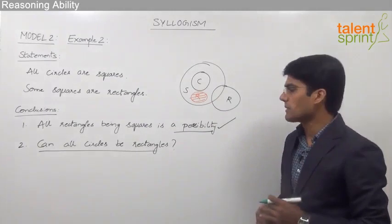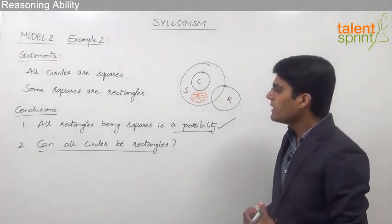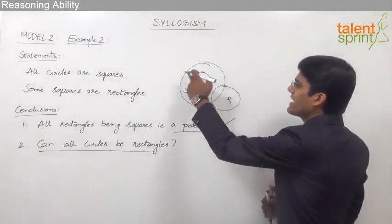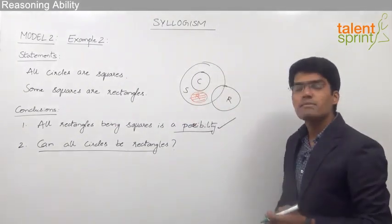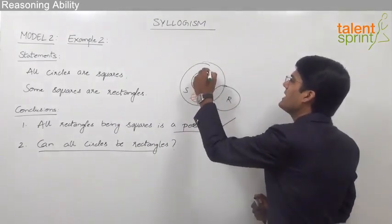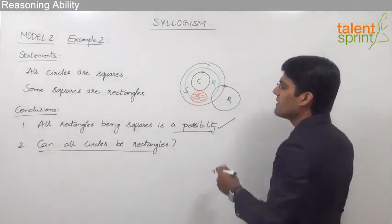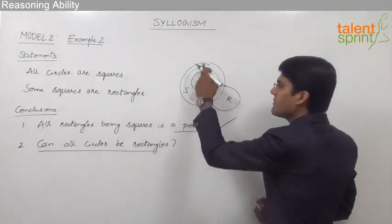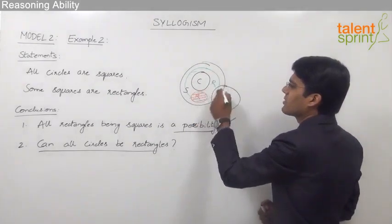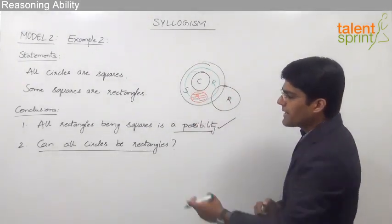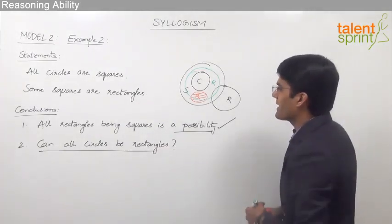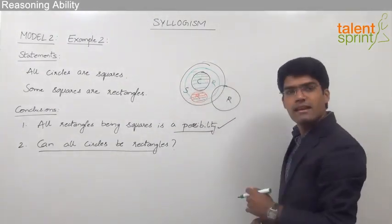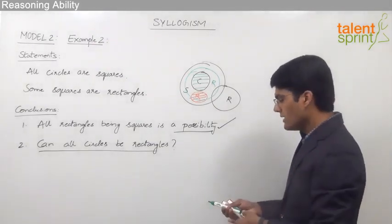Now let us check the second conclusion: can all circles be rectangles? By the first statement, all circles are squares, as shown. For the second statement, some squares are rectangles — we can draw the rectangles in a form where the given statements are followed. We find that all circles are squares and some squares are rectangles. By placing the rectangles appropriately (shown in green), we find that all circles are inside rectangles. So all circles can be rectangles in this diagram, and the second conclusion is also true.